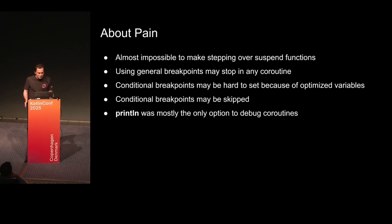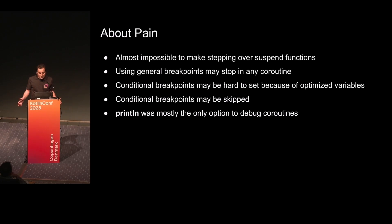So at that time, it was much more painful to debug coroutines. It was almost impossible to make stepping over suspended functions. Using general breakpoints may stop in any coroutine. Conditional breakpoints may be hard to set because of optimized-out variables, and conditional breakpoints may be skipped for some reasons. Println was mostly the only option to debug coroutines at that time.